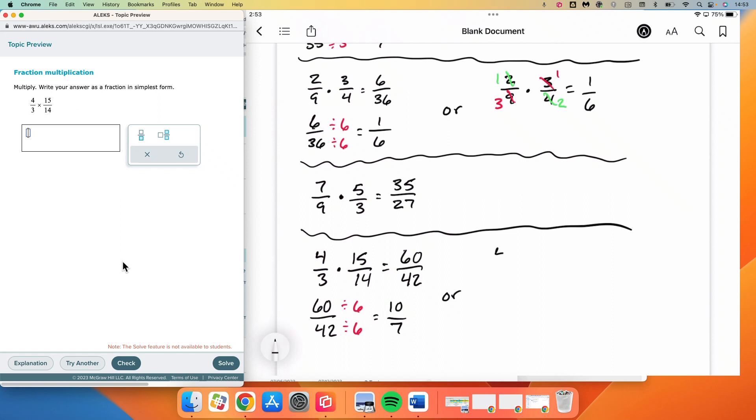Alternatively, we could do the cross-cancelling method where we have 4 over 3 times 15 over 14. We would need to see that 3 and 15 both have a common factor of 3. We replace those with 1 and 5. Then 4 and 14 are both divisible by 2. 4 divided by 2 is 2, 14 divided by 2 is 7. So now multiplying our new numbers straight across.